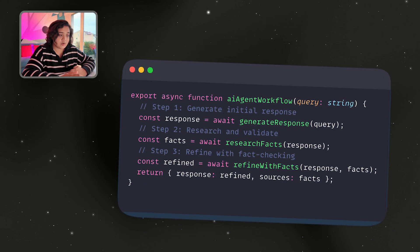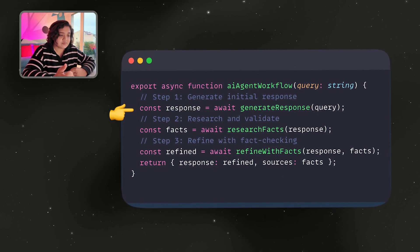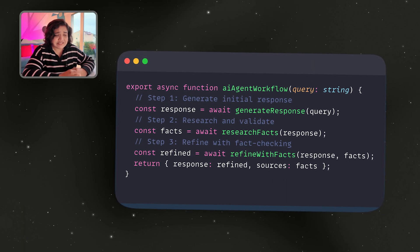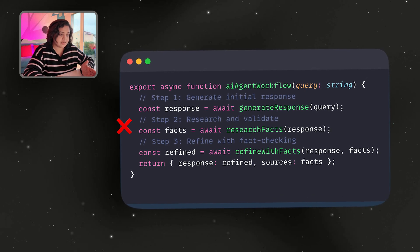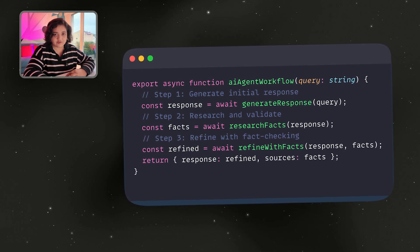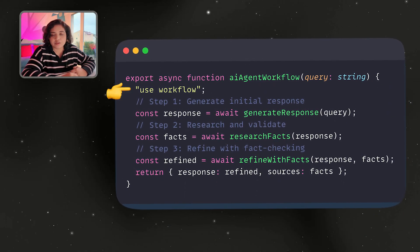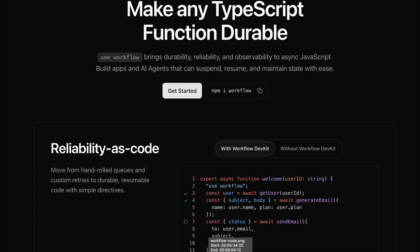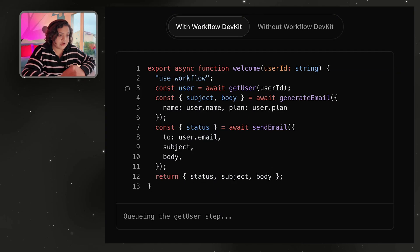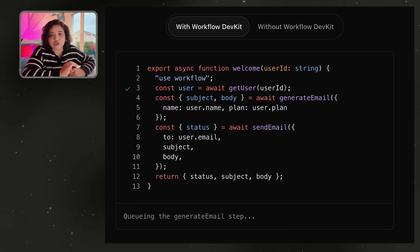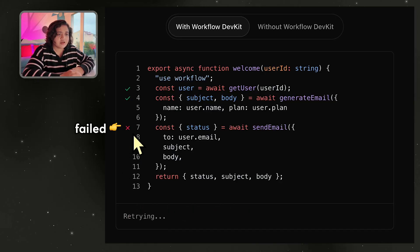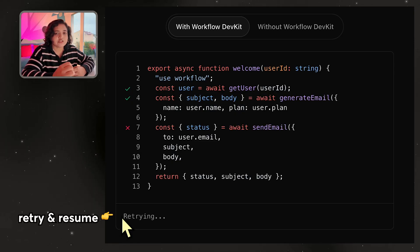The second use case is in the AI world. Imagine you're building an AI agent that runs multiple steps: generate something, research, refine, and summarize. The problem is that when one step fails, your application restarts and you completely lose the context. That's where another directive called 'use workflow' comes in. It brings durability, reliability, and observability to your async JavaScript — you can suspend, resume, and maintain state. Every step in the workflow function is a discrete workflow step, and the streaming response is passed from step to step. This is a huge pain point when shipping AI agents, because without this it's really hard to trace which step failed, and you may burn a lot of credits retrying. 'use workflow' allows proper debugging, step-by-step inspection, pause, replay, and time travel through steps with traces and automatic metrics.